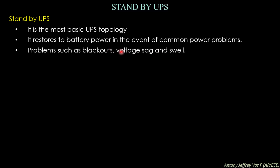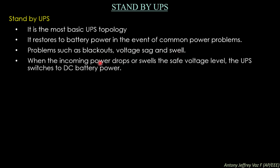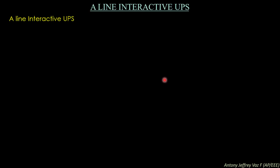When there is a blackout, the UPS provides power. When there is a sag — low voltage — the UPS delivers the correct voltage required. When there is a swell — high voltage — the UPS delivers the required voltage to the connected device. When the incoming power drops or swells outside the safe voltage level, the UPS switches to DC battery power present within the UPS itself.